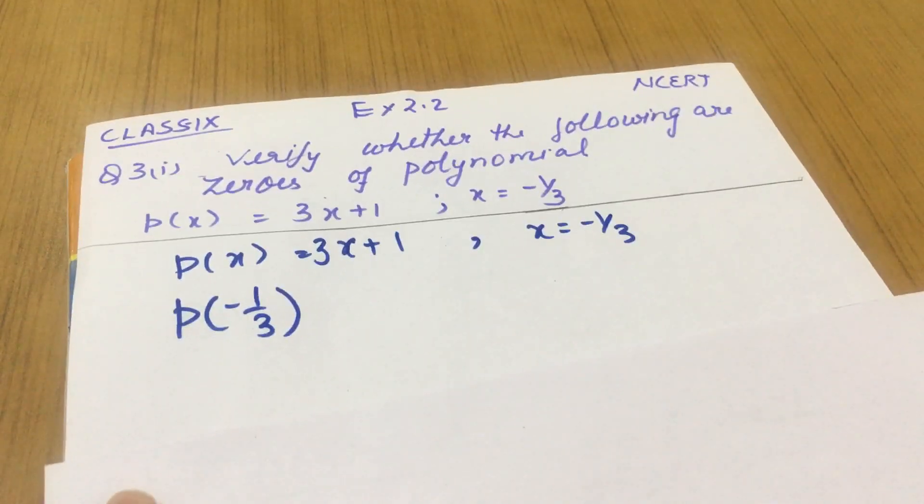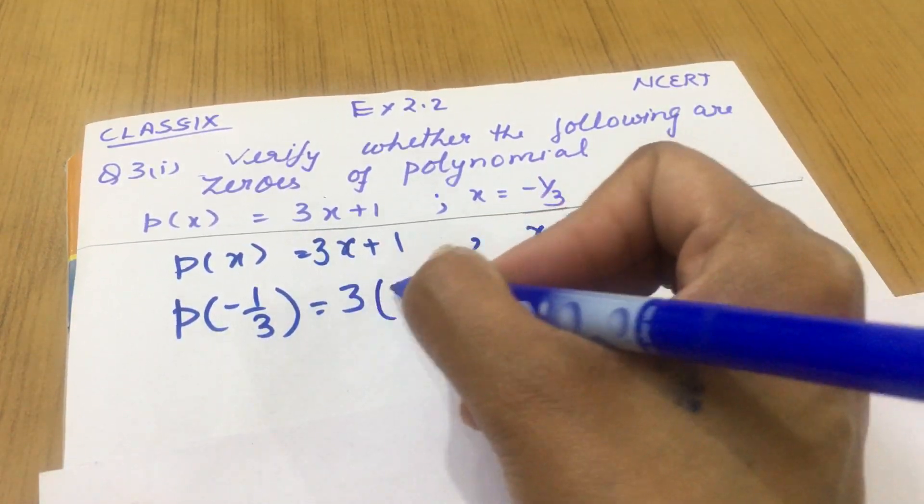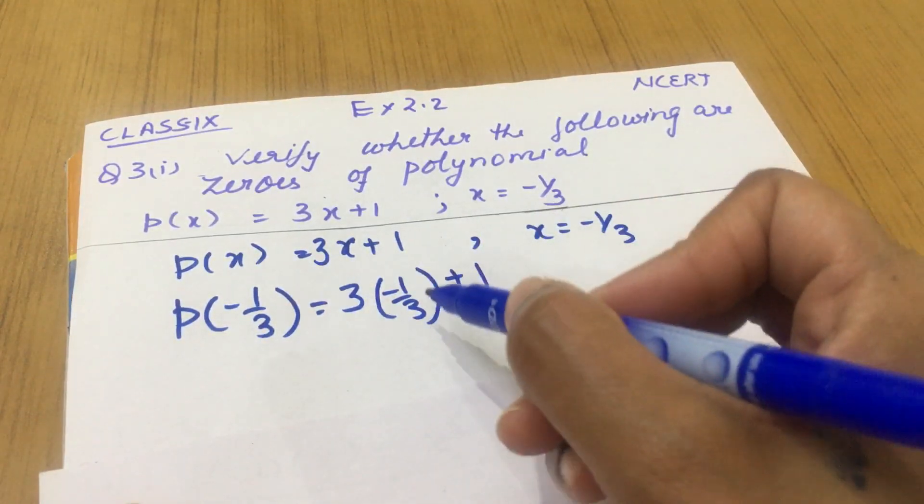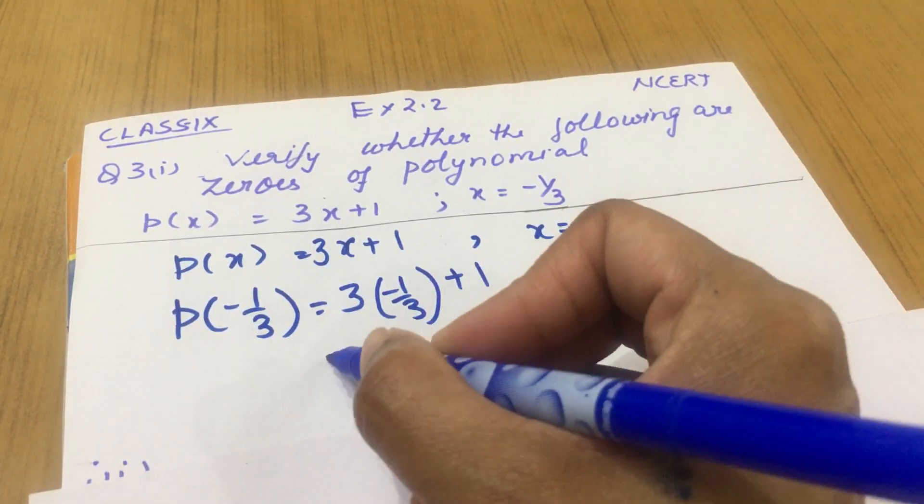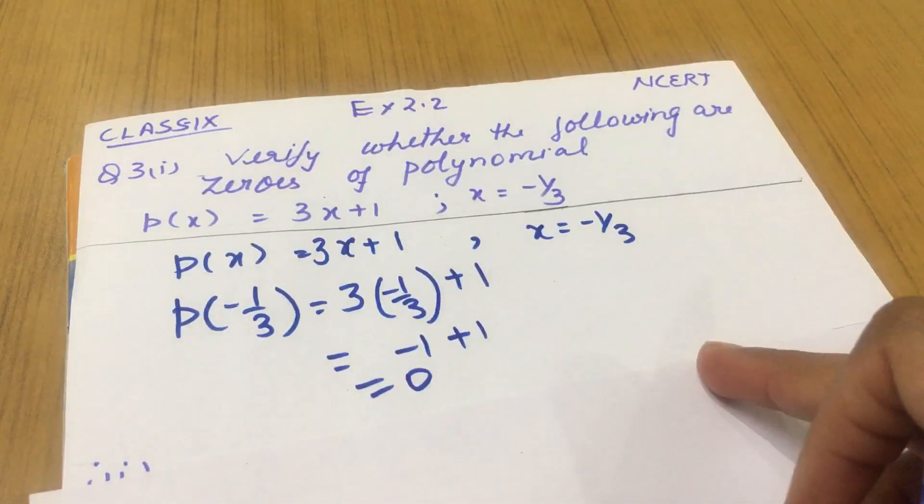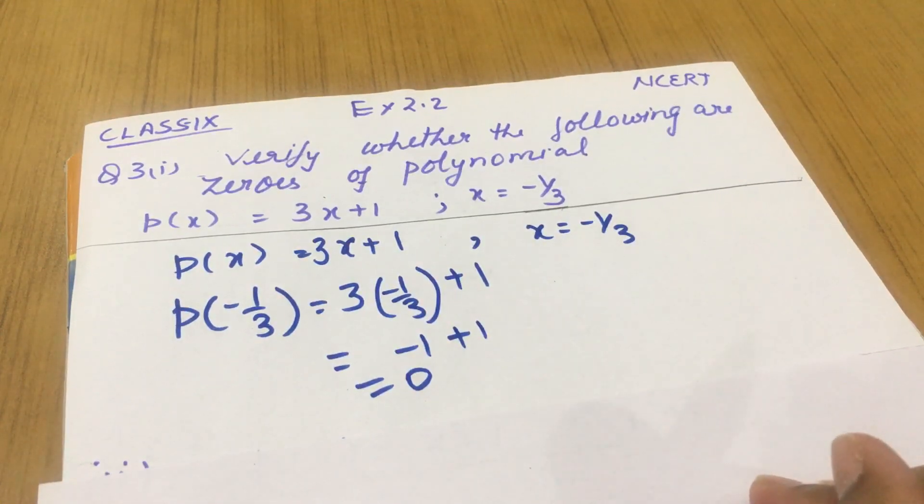This is called zero of the polynomial. So if I am substituting 3 into minus 1 upon 3 plus 1, it gets cancelled and it is minus 1 plus 1 equals to 0. It means x equals to minus 1 upon 3 is a zero of the polynomial.